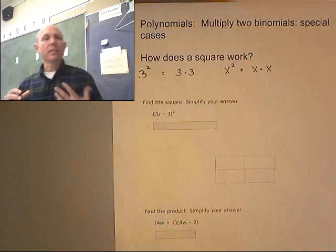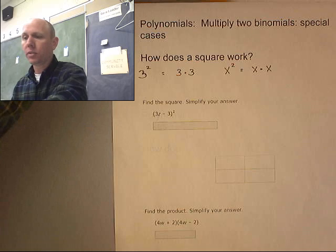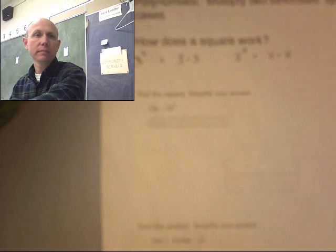Well, let's apply that. The square tells us to write it out twice and multiply it. I want you to see what it looks like down here. We're going to square a binomial.